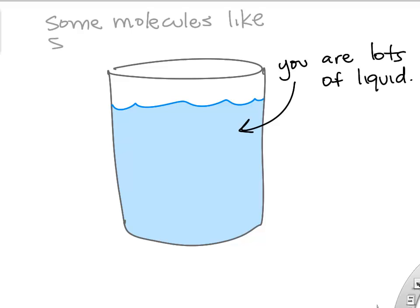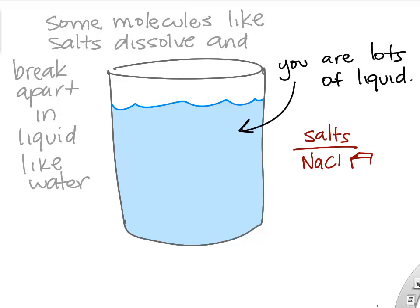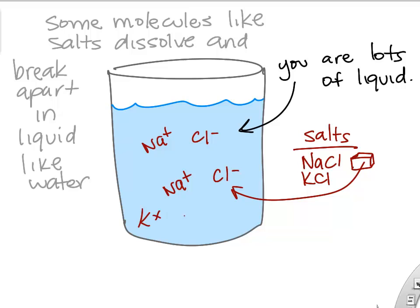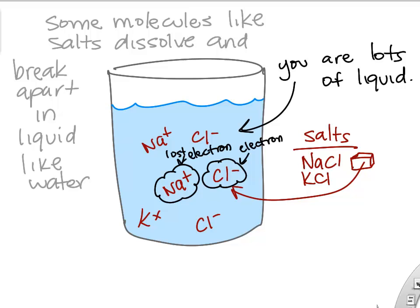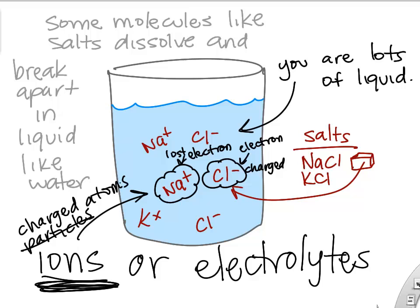You are a lot of water. Some molecules, when placed in water, will dissolve. Table salt — sodium chloride — when put into water, dissolves into a sodium atom and a chloride atom, and they become charged. Sodium gives up an electron to the chloride, so sodium becomes positively charged and chloride becomes negatively charged. We call these charged particles ions or electrolytes.